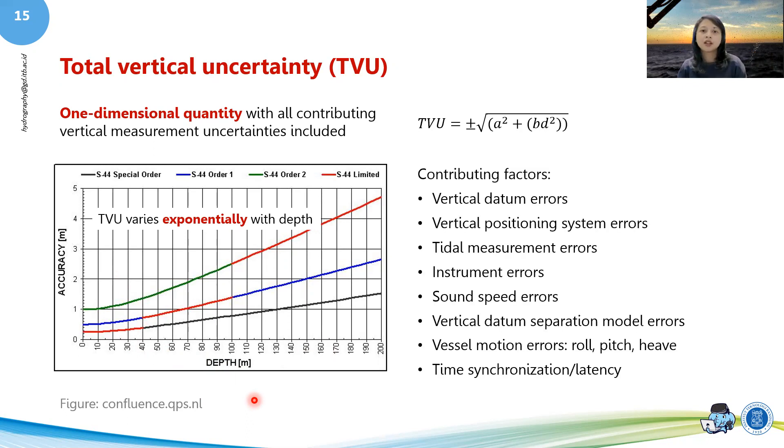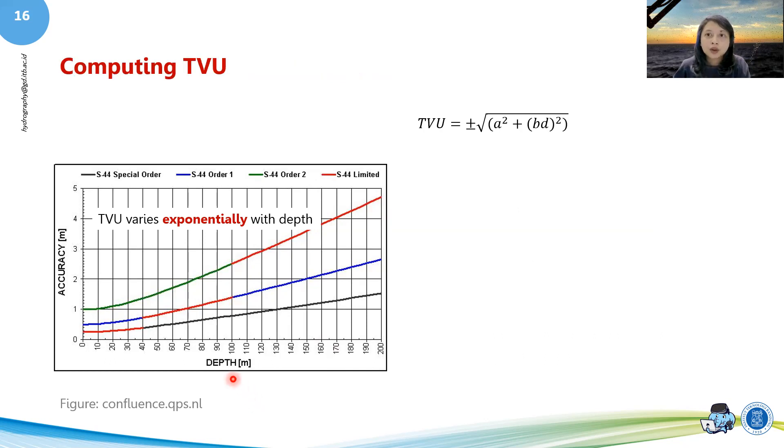So the contributing factors in here are vertical datum errors, vertical positioning system errors, tidal measurement errors, etc. And these errors actually divided into two types of errors, because that's what we are going to do when we're computing TVU. So in TVU, you've actually got two types of errors, one that varies with depth and the other does not vary with depth.